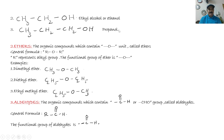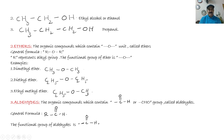Next are ethers. The compounds which contain an oxygen atom in the middle with two alkyl groups attached on either side are called ethers. Their general formula is R-O-R, where R represents the alkyl group and the functional group of ether is the oxygen atom between the two alkyl groups.